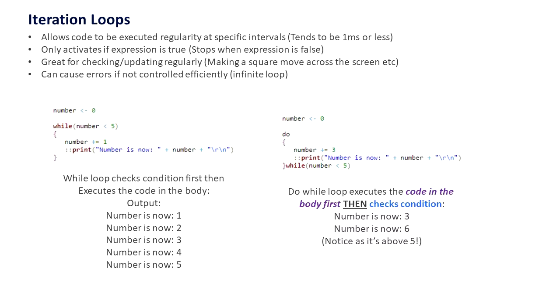The one to the left is a while loop. It will check then it will execute the inside body then it stops if the number is less than five. The one to the right is using the do-while loop which executes first then checks. Notice the number goes above five as it does the operation then it checks, unlike the while loop which checks then executes the inside body.